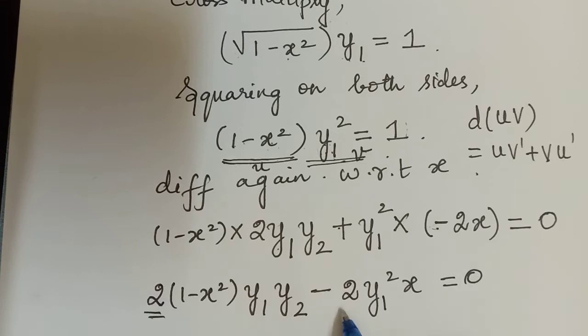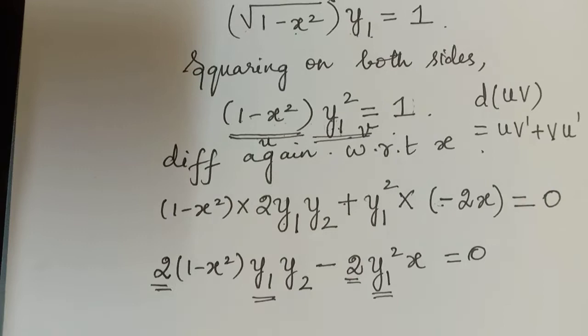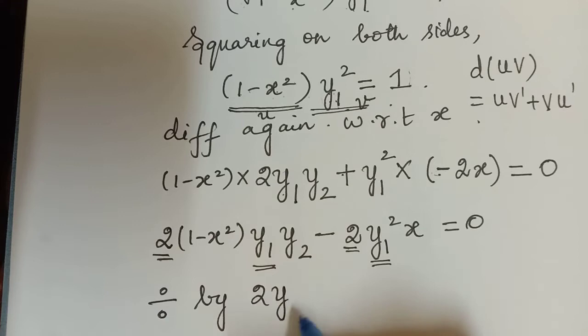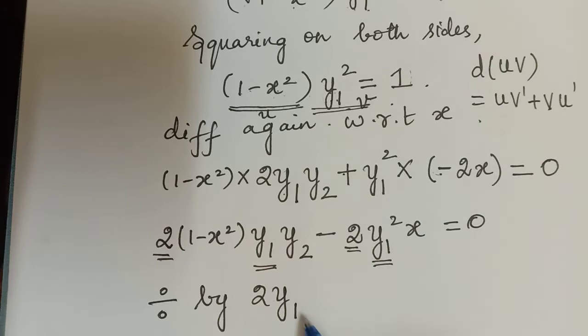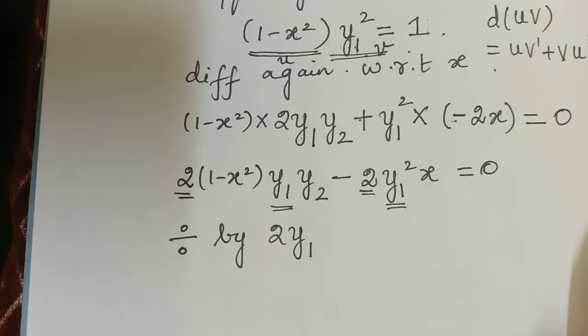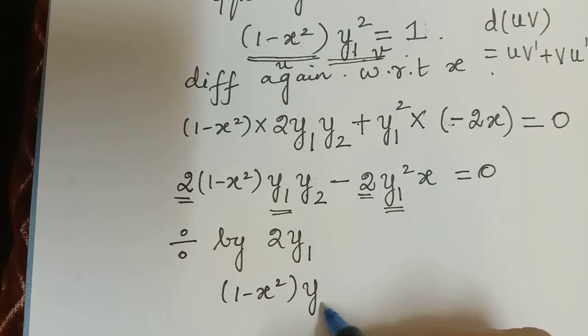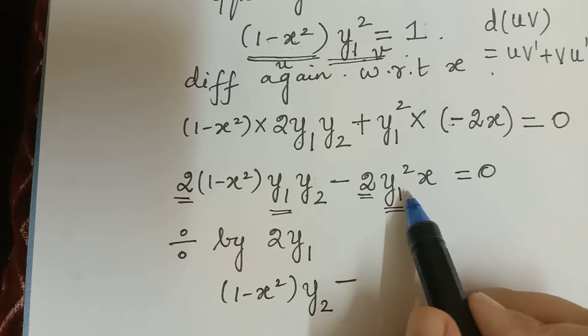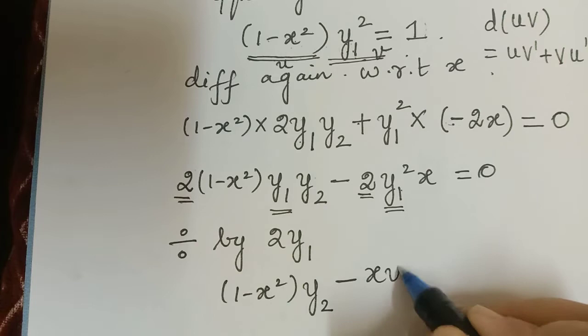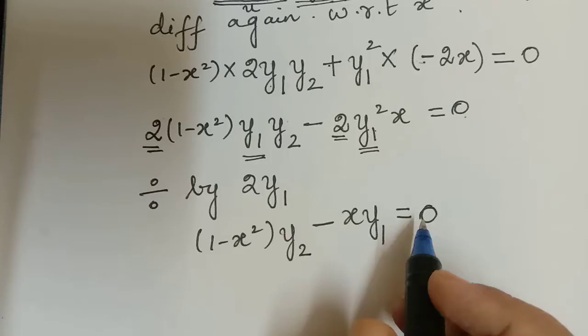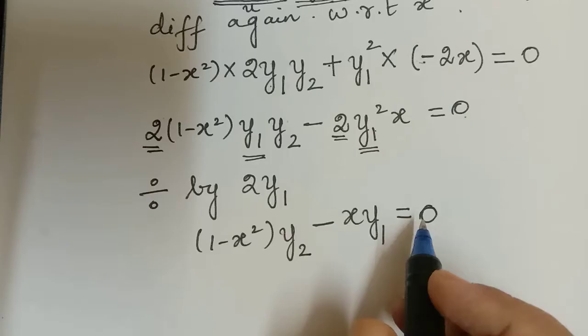Now 2 is common in both terms and one y₁ is common in both terms. So we divide throughout by 2y₁ on both left and right hand sides. This gives us 1 minus x squared multiplied with y₂ minus x·y₁ equal to 0. Now after this we shall take the nth derivative on both sides.